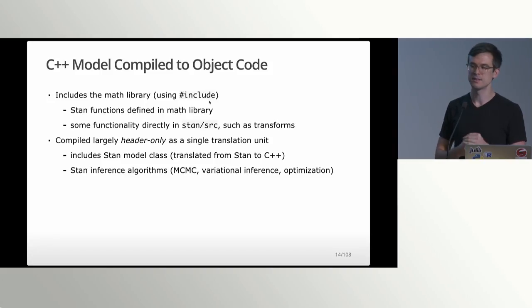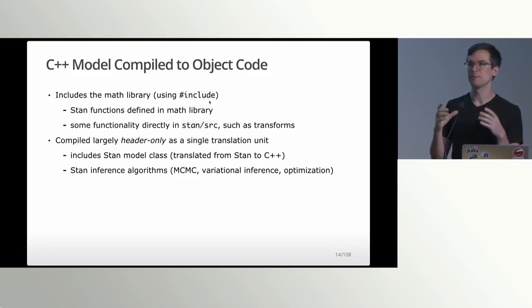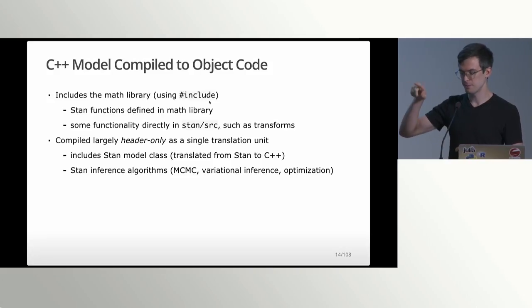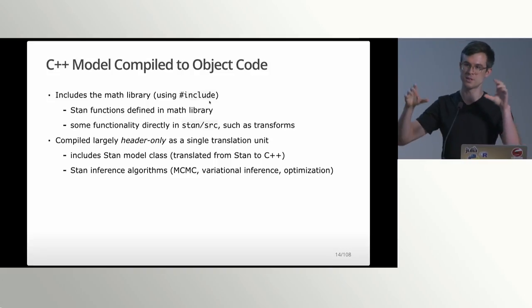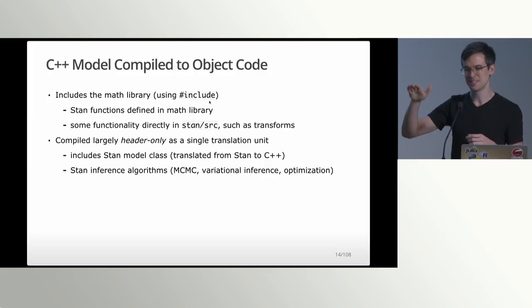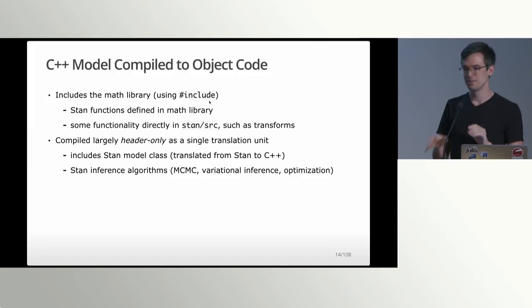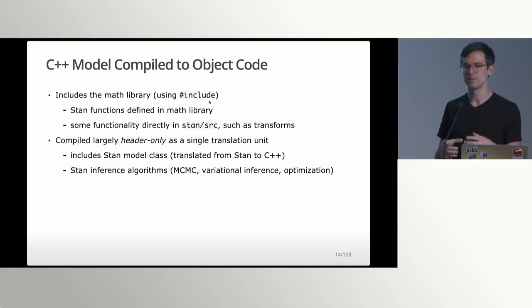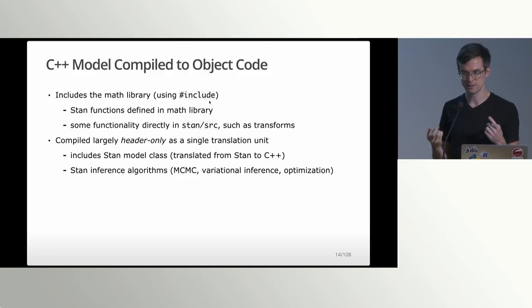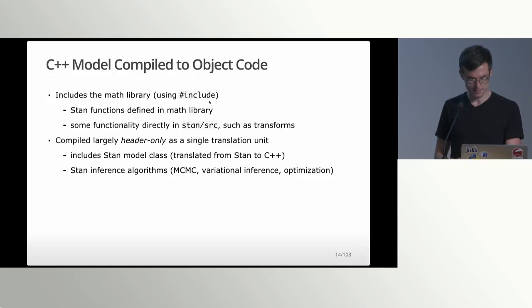The interesting thing is that it's all compiled header-only. What's happening behind the scenes is the generative model C++ class, the math library, and the algorithms are all pasted into essentially the same file by the C++ compiler and then compiled all at once — in C++ terminology, that's called a translation unit. There are some weird things that happen as a result, where we have to declare all of our functions in the math library inline.